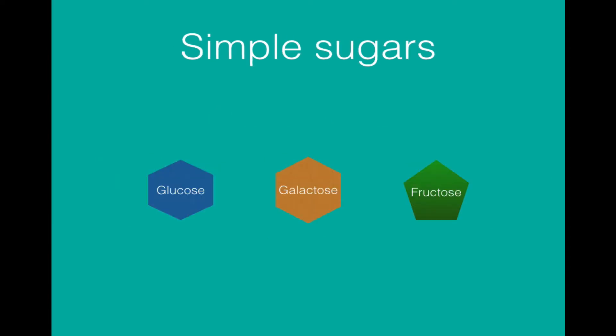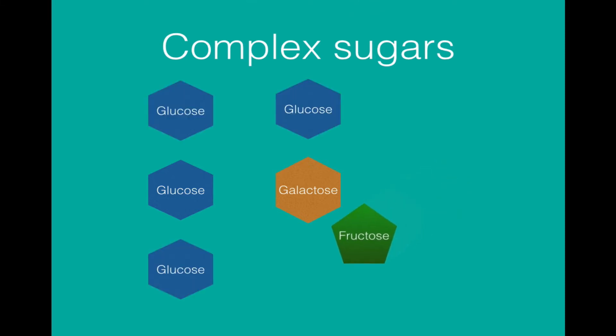Simple sugars include glucose, galactose and fructose. Simple sugars can form complex sugars by bonding with each other. So glucose and galactose molecules, and glucose and fructose molecules together make new molecules which have different names.